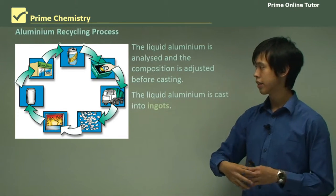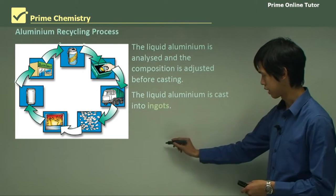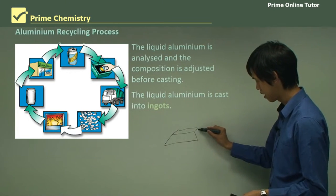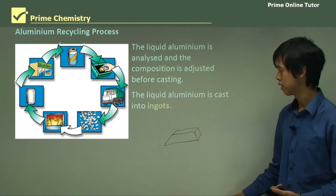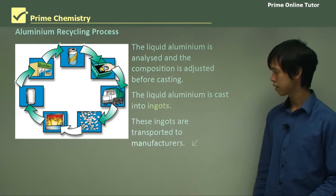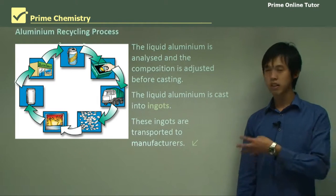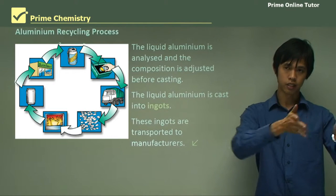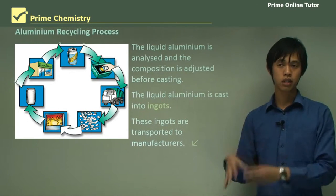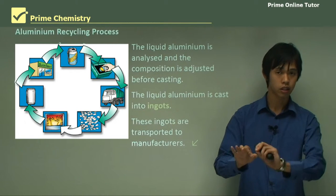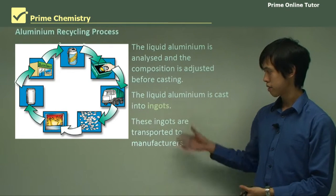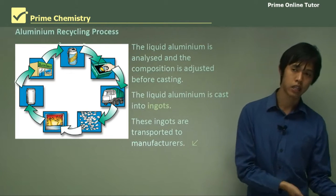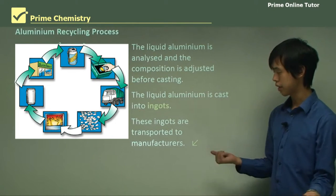The aluminium is cast into a new shape — usually ingots, which are those little bars, like bars of gold. Those ingots are then transported to manufacturers. It's a very simple process, a lot simpler than the copper extraction process. We collect the aluminium, sort it into its different alloys, melt it down, test for impurities, cast it into ingots, and ship those bars off to people who want to turn it into something else — maybe cans or jet engines. And that's how we recycle aluminium.